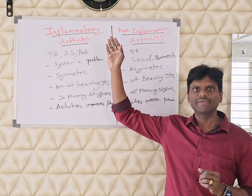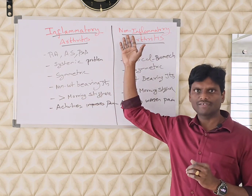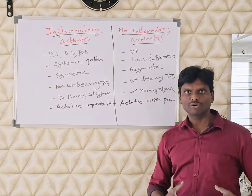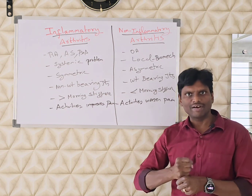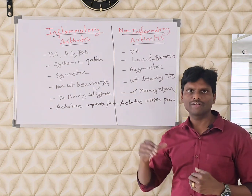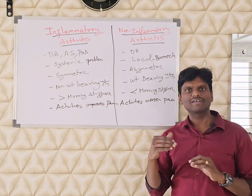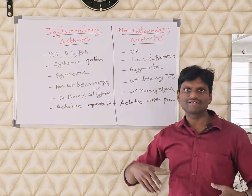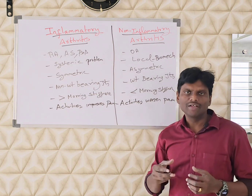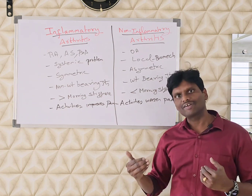Inflammatory arthritis can affect non-weight-bearing joints as well, whereas non-inflammatory mechanical arthritis will always affect weight-bearing joints — primarily the knee and hip joints, which undergo wear and tear due to load. The systemic nature of inflammatory arthritis does not consider weight-bearing versus non-weight-bearing joints, so it can affect even the jaw joint, the atlanto-axial joint, and the elbow joint.